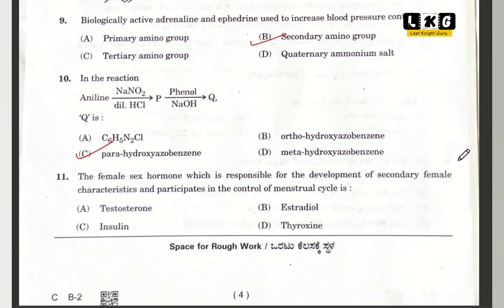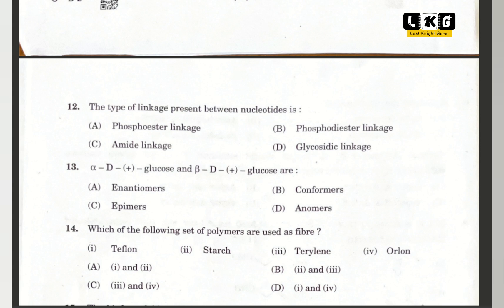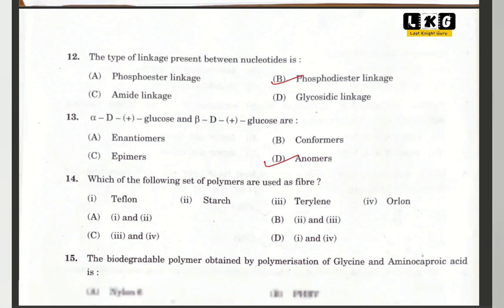Question number 11: the female sex hormone responsible for the development of secondary female characteristics and which participates in control of the menstrual cycle is option B — estradiol. Question number 12: the type of linkage present between nucleotides is option B — phosphodiester linkage. This is a direct question. Question number 13: alpha-D-plus glucose and beta-D-plus glucose are option D — anomers.